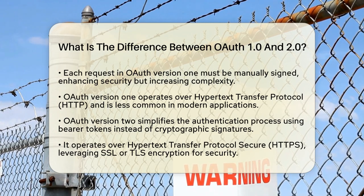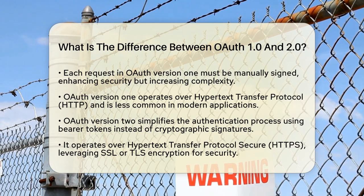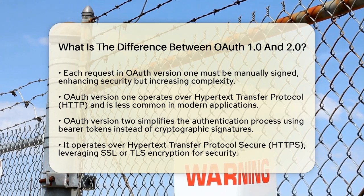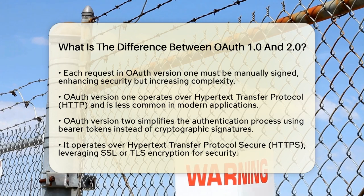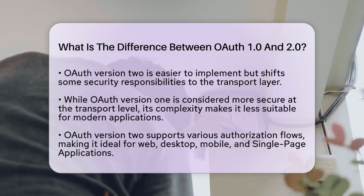When we look at the security differences, OAuth Version 1 is often considered more secure at the transport level because of its signature-based method. However, this added security comes with the cost of increased complexity. OAuth Version 2, while easier to implement, relies on proper configuration of HTTPS to ensure security.